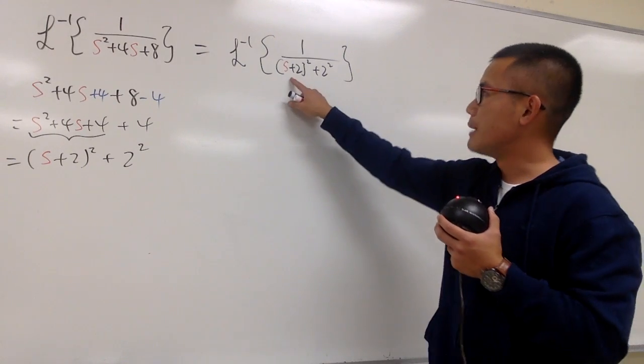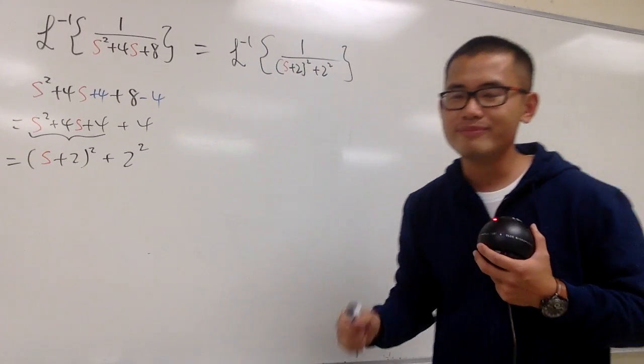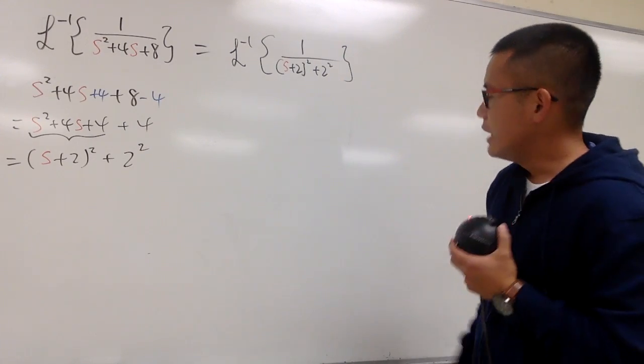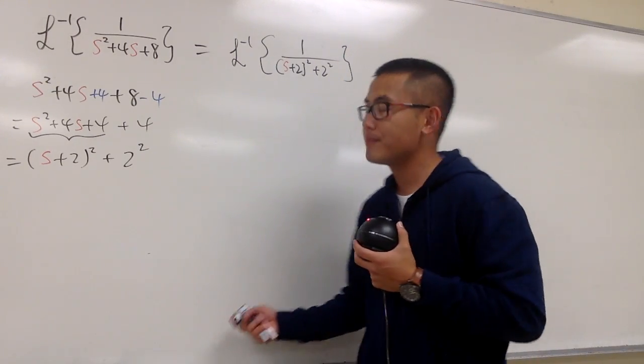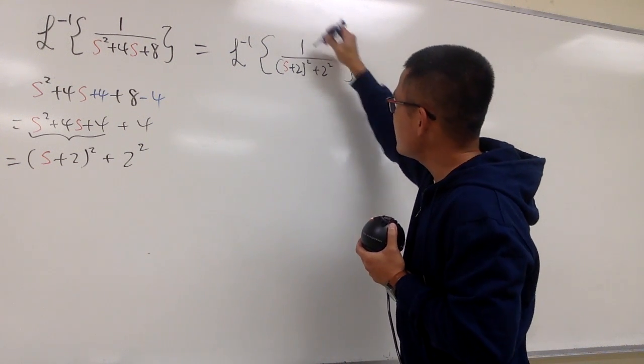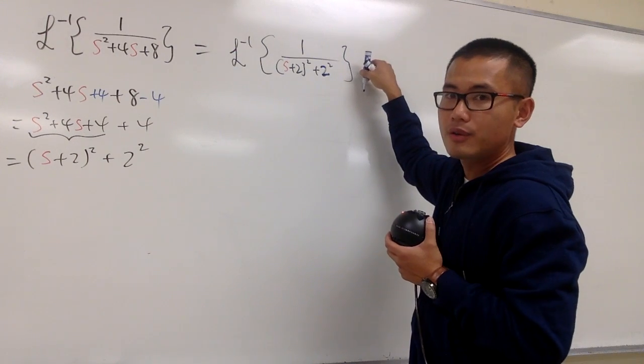As you can see, on the bottom, we have the s squared plus 2 squared. On the top, there's no s at all. So you know this one right here, it enforces the sine. And in order for us to have the sine, we must have a 2 right here. Because the number on the top must match with this number before you square.